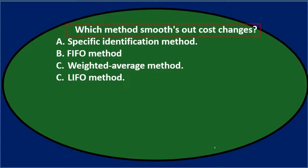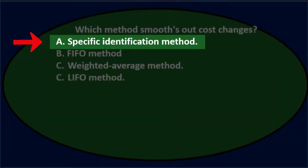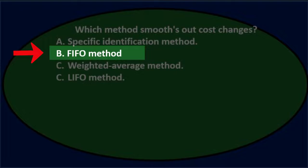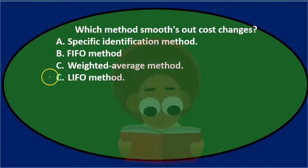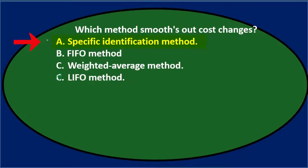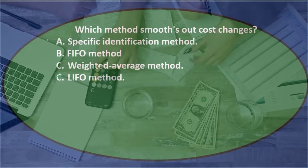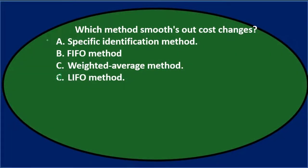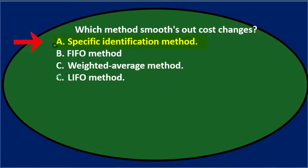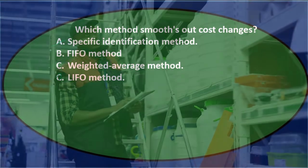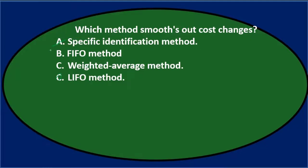Next question: which method smooths out cost changes? A, Specific Identification Method; B, First In First Out method; C, Weighted Average Method; and D, Last In First Out method. Specific Identification is not really a cost flow assumption method — we don't have control over the flow there; it's just whatever the customer decided to pick, usually for larger pieces of inventory. We really couldn't tell whether that's going to result in smooth changes or not. So I don't think that's going to apply — we're really looking for the flow assumption methods.